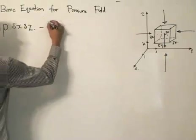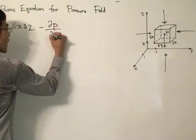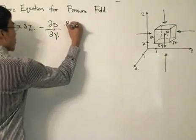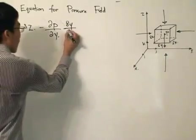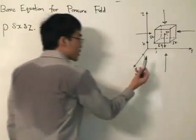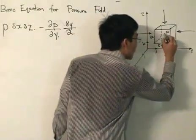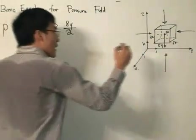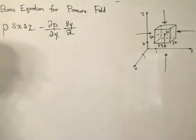We're going to take partial P partial y multiplied by delta y divided by 2. Wow, why is that? Well, if you notice there's a small change in the pressure moving from this point to this point. That small change, if you think about it,